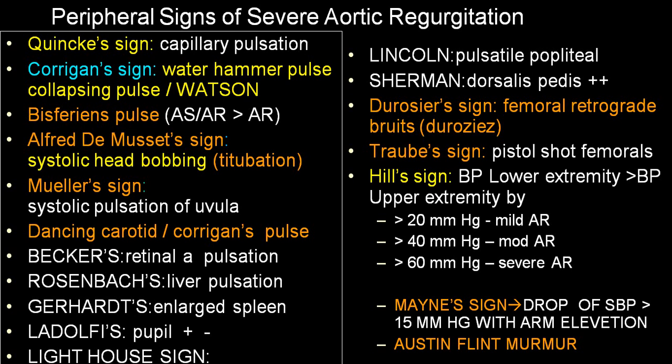Austin Flint murmur is a murmur heard over the aortic area due to flutter of the mitral valve because of aortic regurgitation. When the regurgitation flow falls over the anterior leaflet of the mitral valve, it produces a flutter and a typical sound — that is the Austin Flint murmur. Another mechanism is pushing of the anterior mitral valve leaflet, producing relative mitral stenosis and a murmur heard over the mitral area, also called Austin Flint murmur.